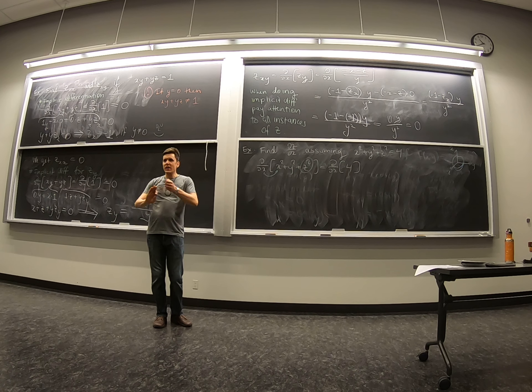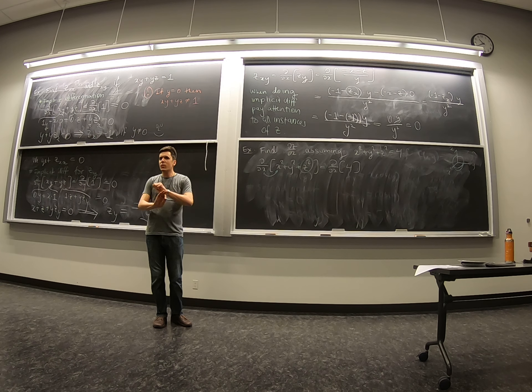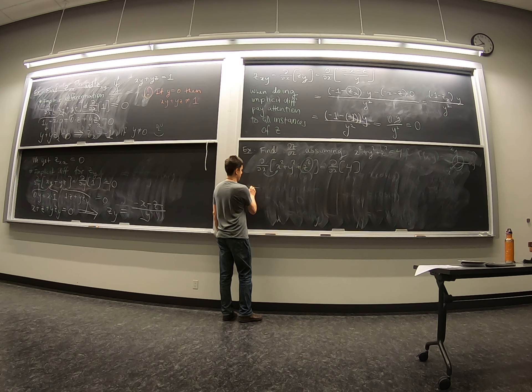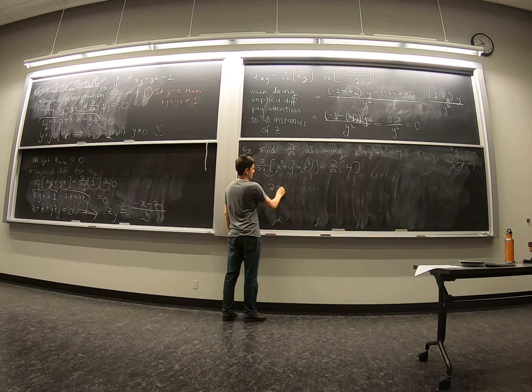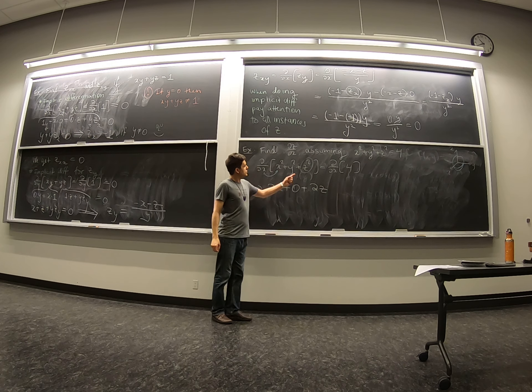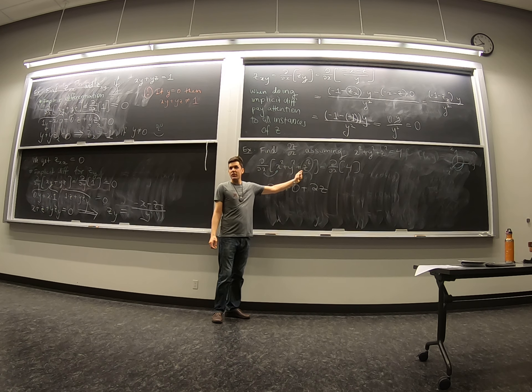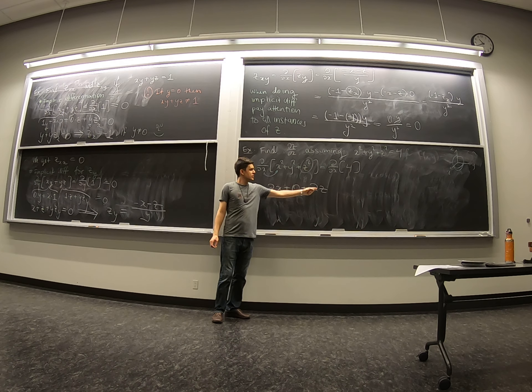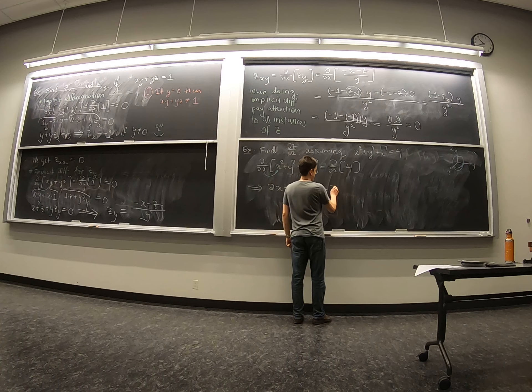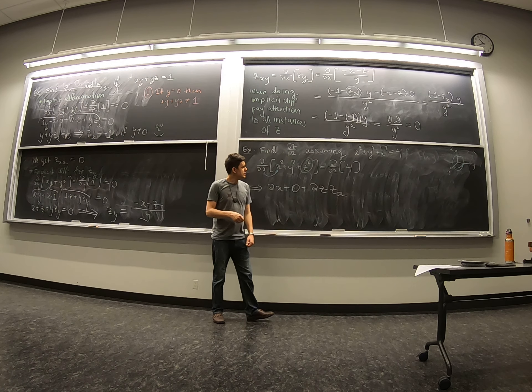For all intents and purposes, y is constant. We just ignore y. It's not going to affect things. So we take the derivative of z, and the cost of that derivative in z is z sub x.